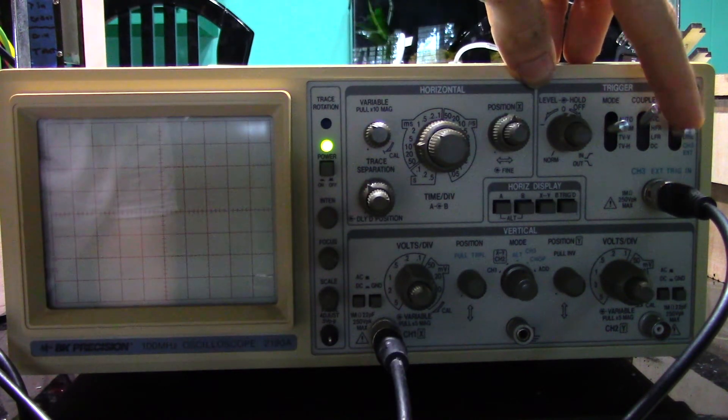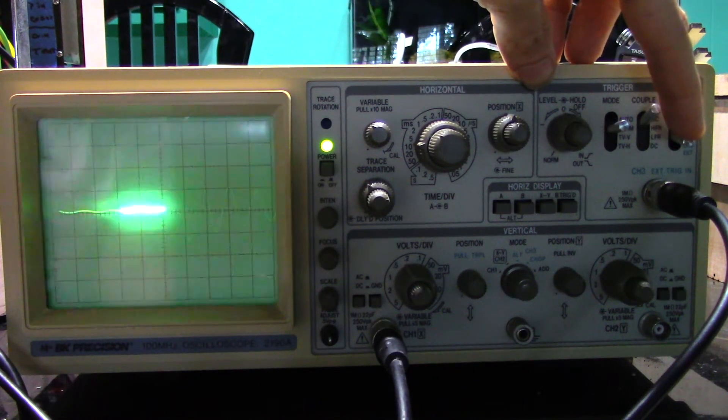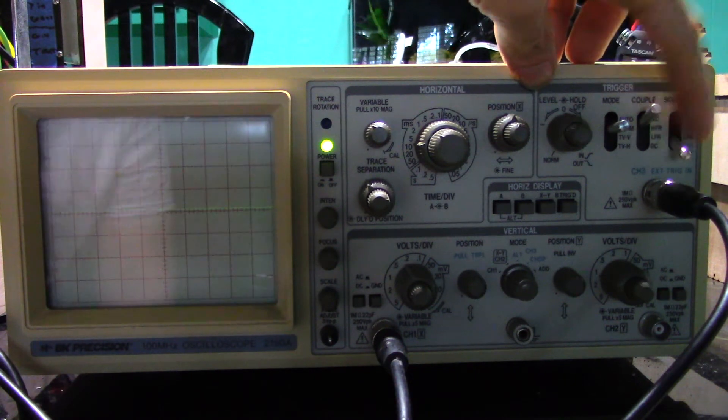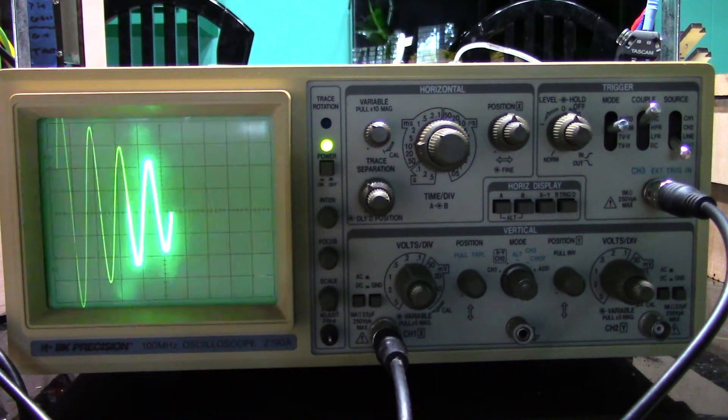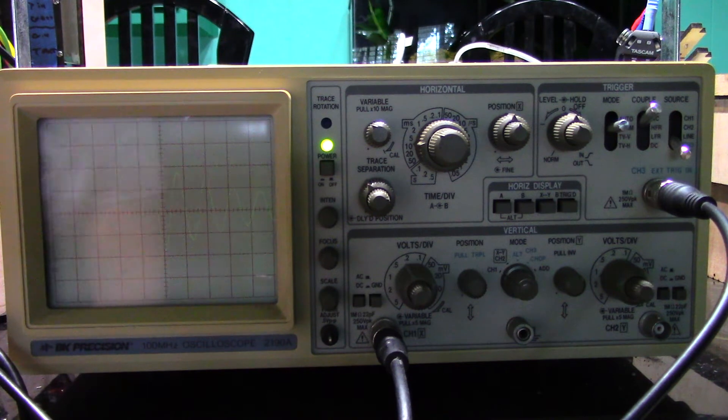I find that the best way to get the trace on the screen is to put the scope in external trigger mode and connect it to either a gate or trigger pulse output. Then you get the signal on the screen every time.